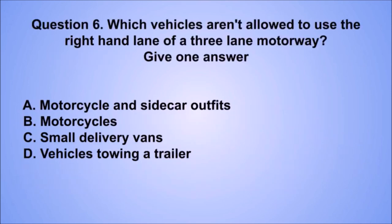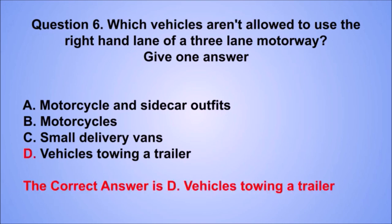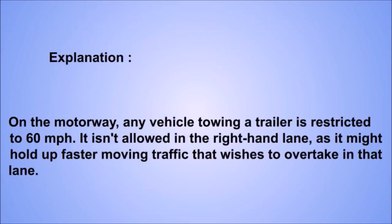Question 6. Which vehicles aren't allowed to use the right-hand lane of a three-lane motorway? The correct answer is D: Vehicles towing a trailer. On the motorway, any vehicle towing a trailer is restricted to 60 mph and isn't allowed in the right-hand lane, as it might hold up faster-moving traffic that wishes to overtake.